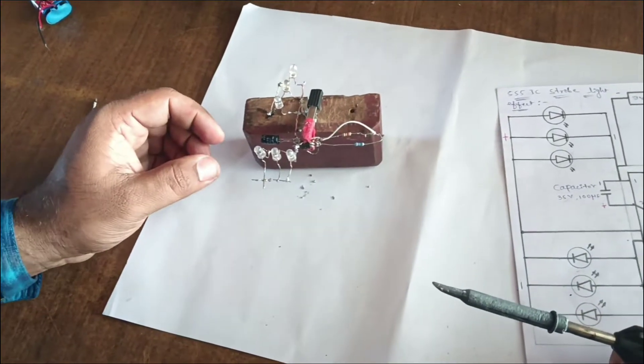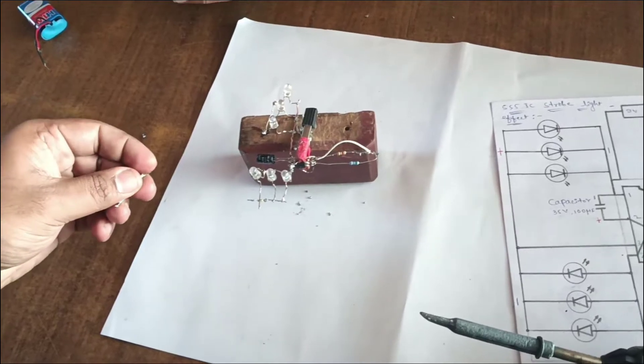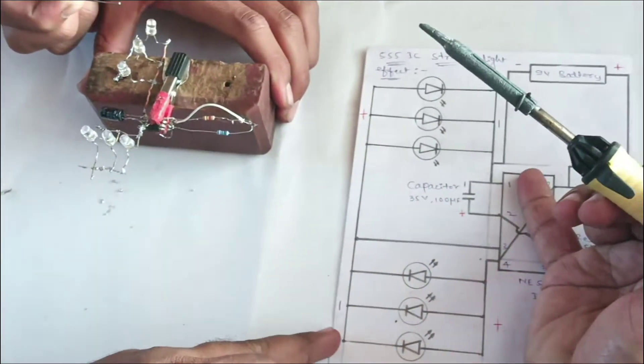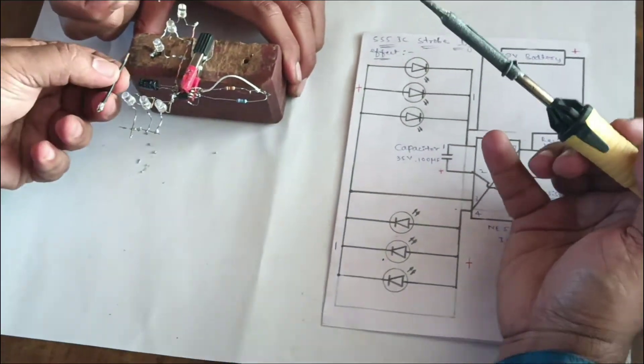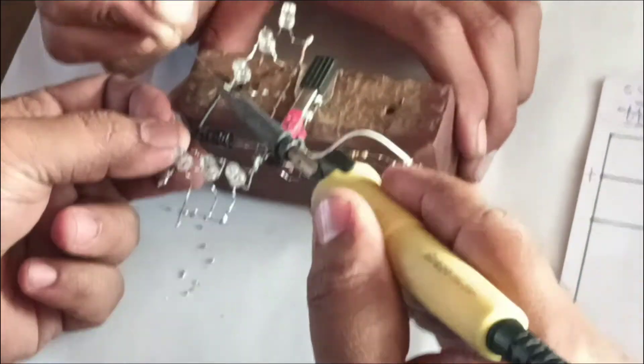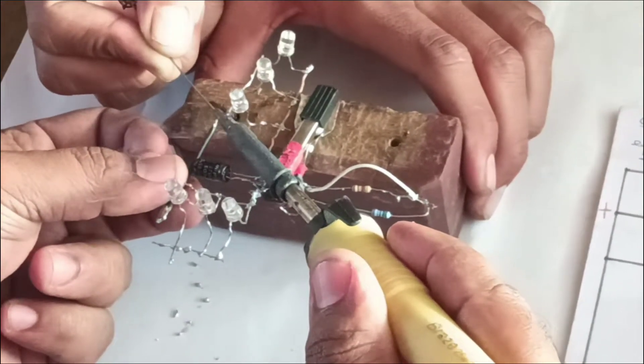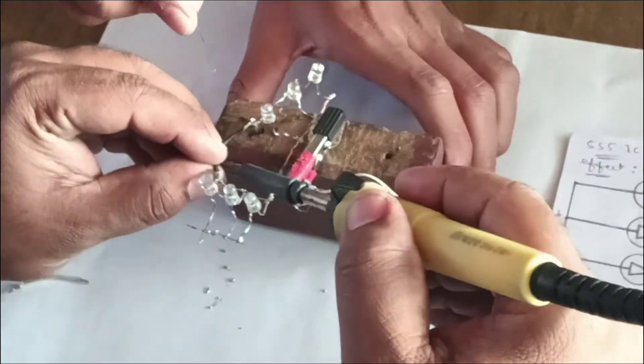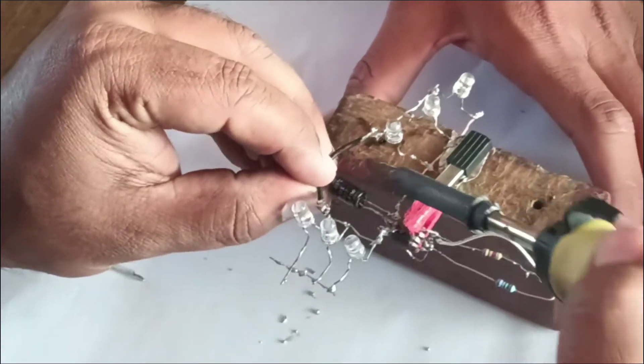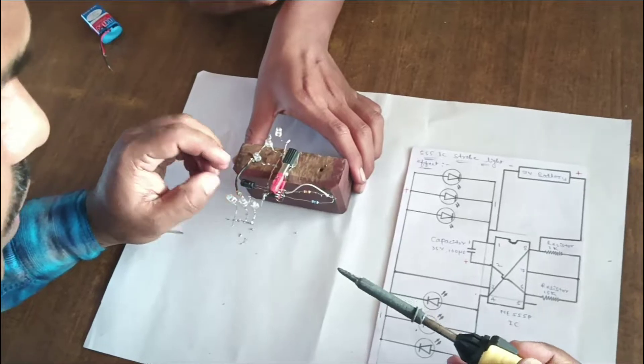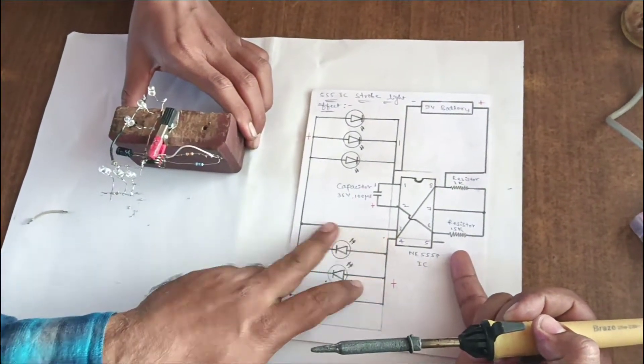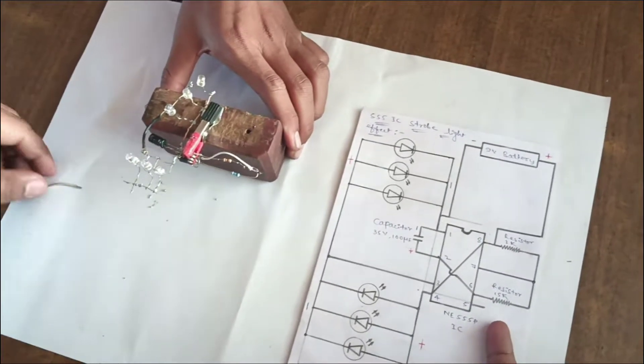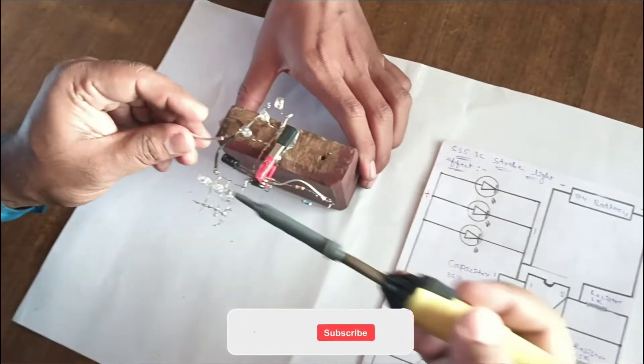Now connect one link wire from pin number 3 to connect these positives and negatives at the midpoint. Connect pin number 3 to the negative and positive poles at their midpoint with a link wire.